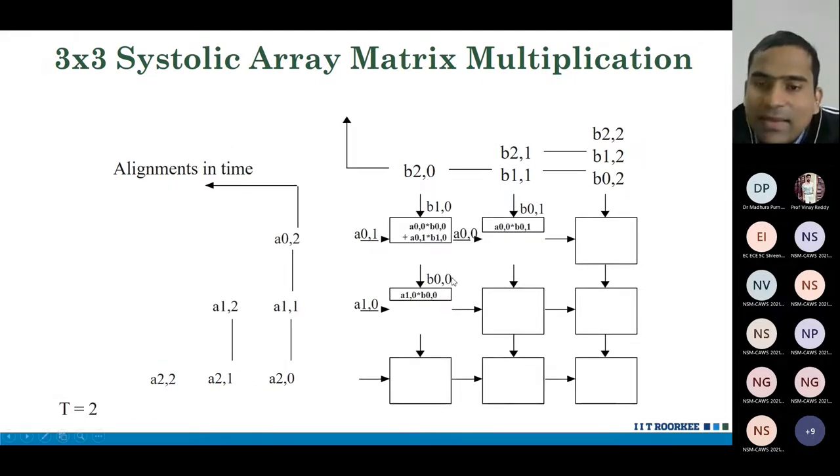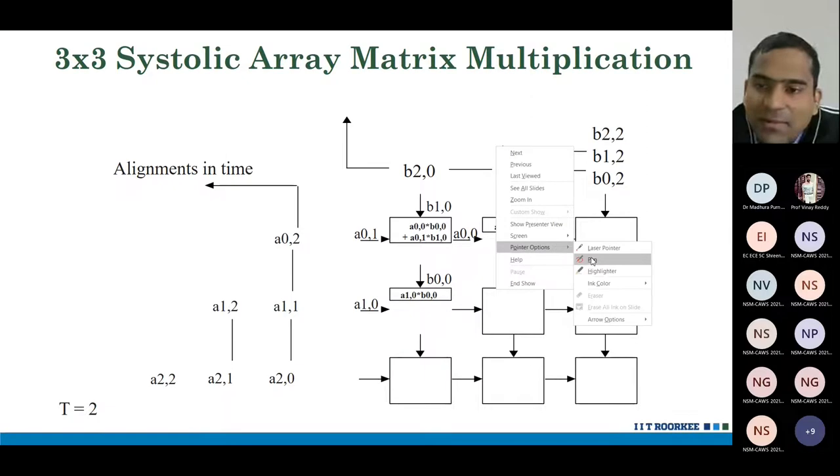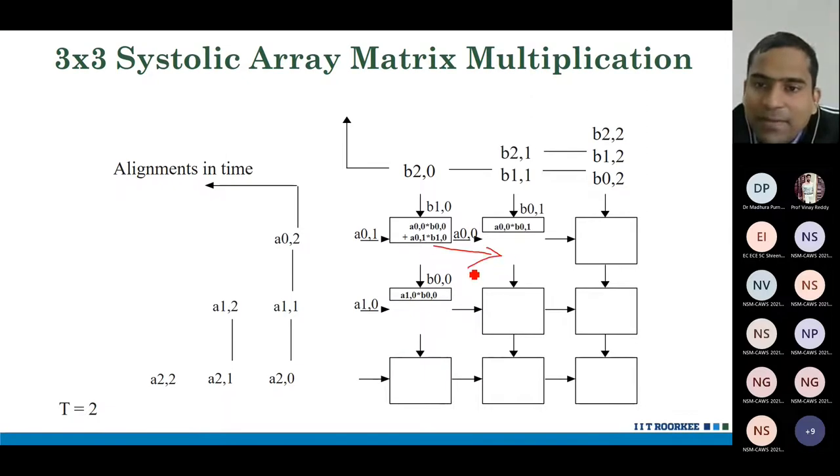In this cycle, a00 moves one more step. b00 moves one step down. And now, a01 has entered the systolic array. And b10 has entered the systolic array. It's very, very simple.